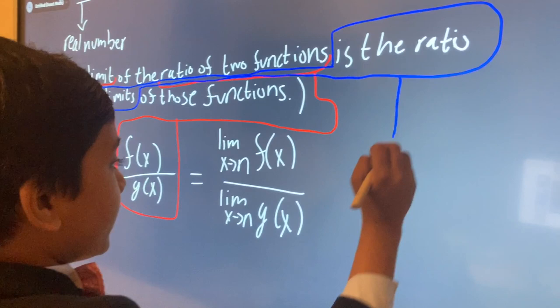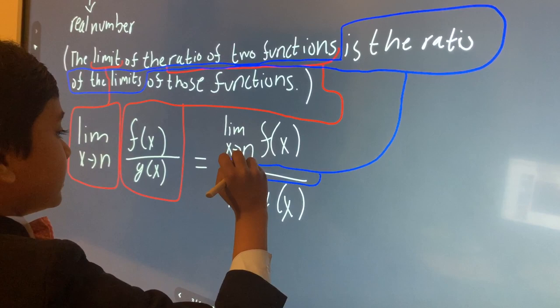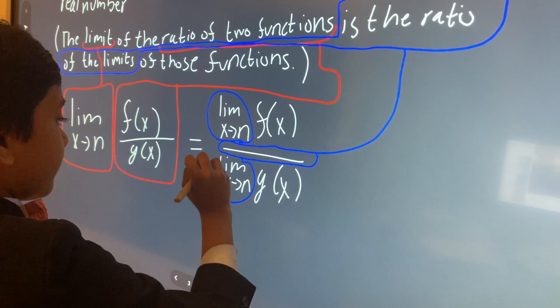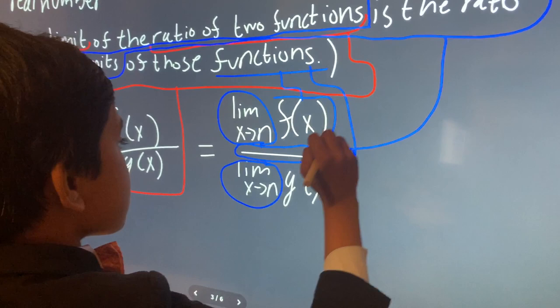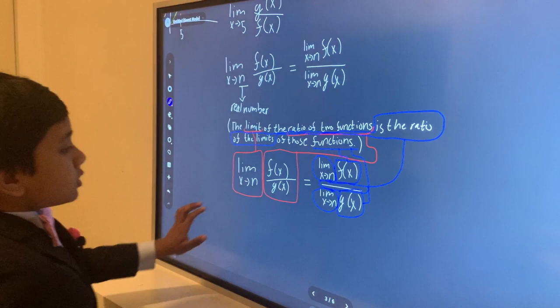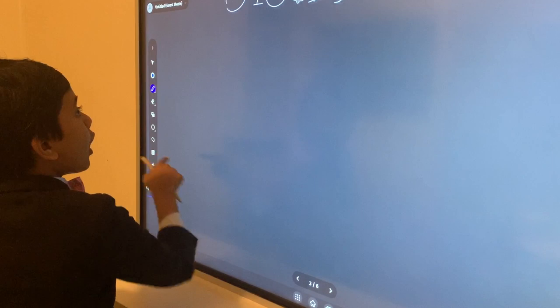So we know the ratio of the limit, we have this ratio and then we also have the limits. And it's mentioned the ratio of the limits of those functions, the functions being f(x) and g(x). So that's how everything corresponds in that equation. So now that's just one of the five limit laws.